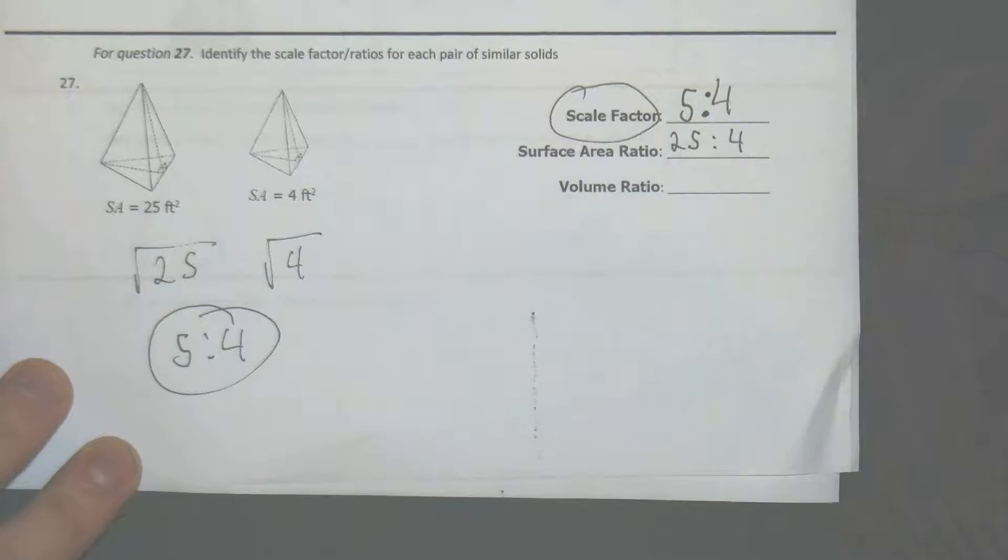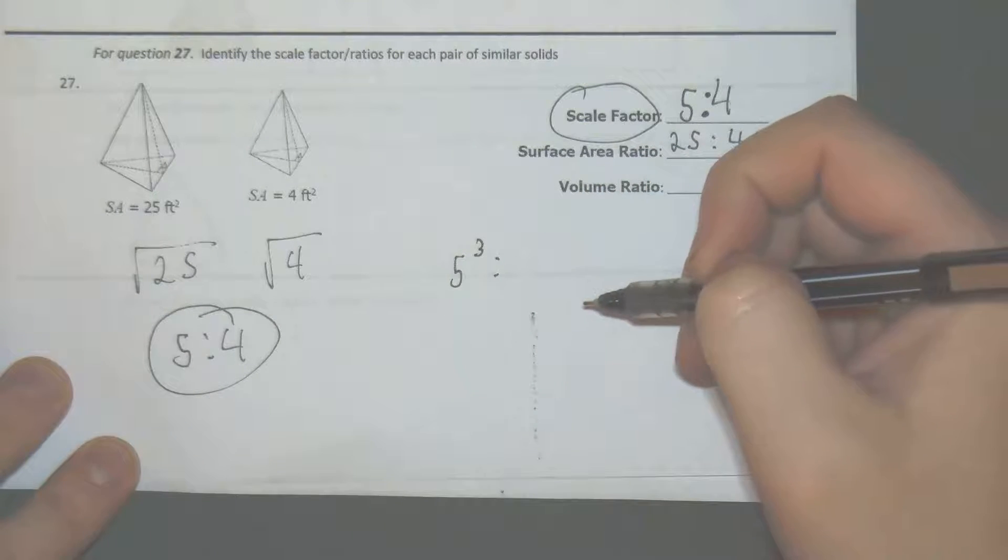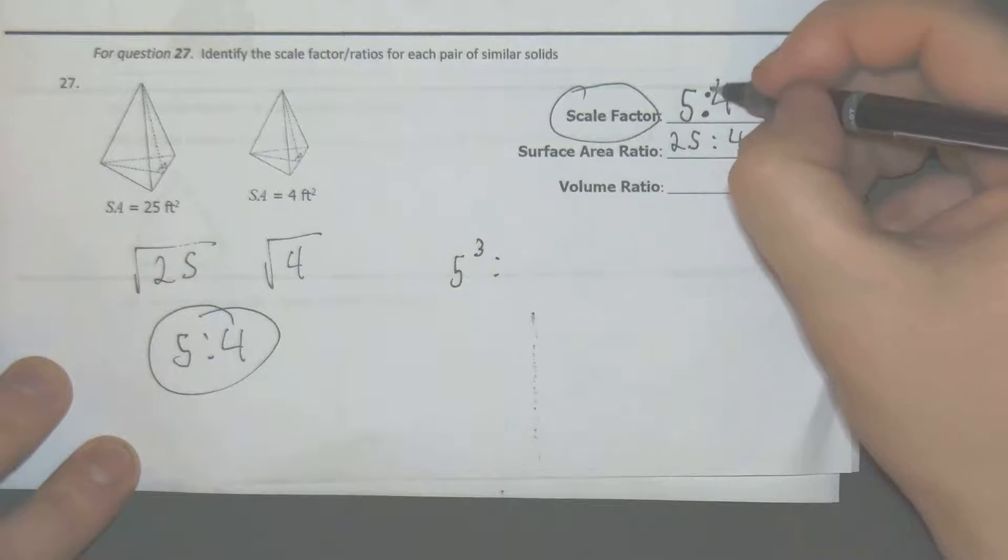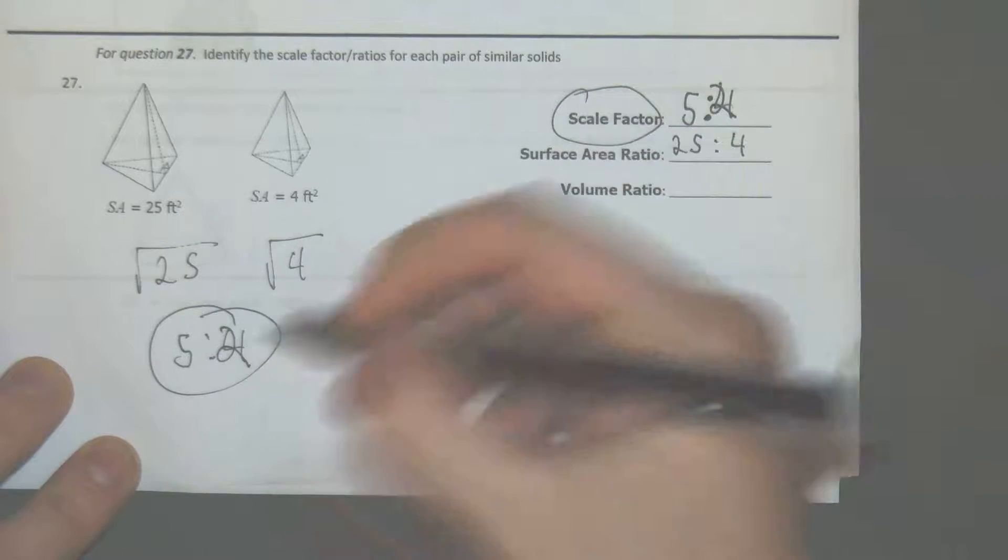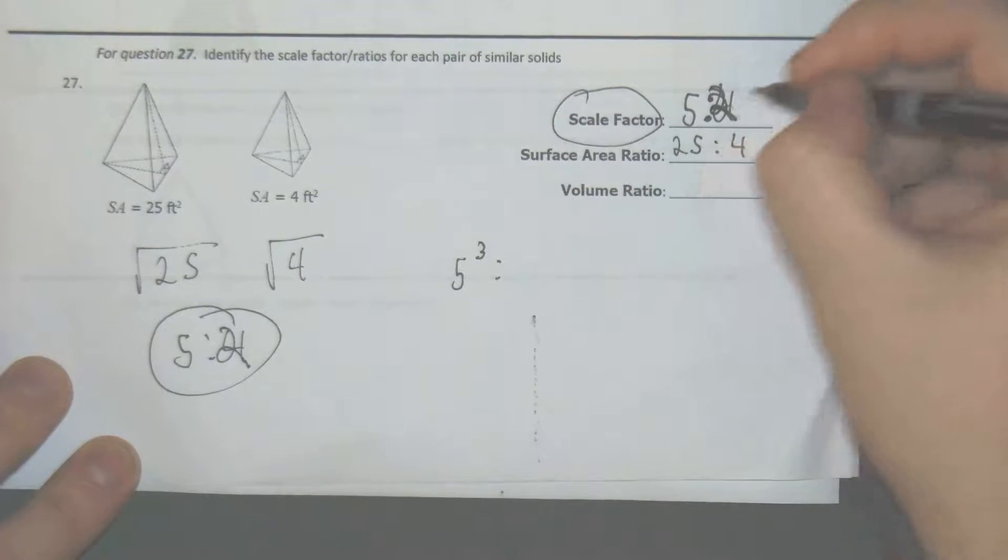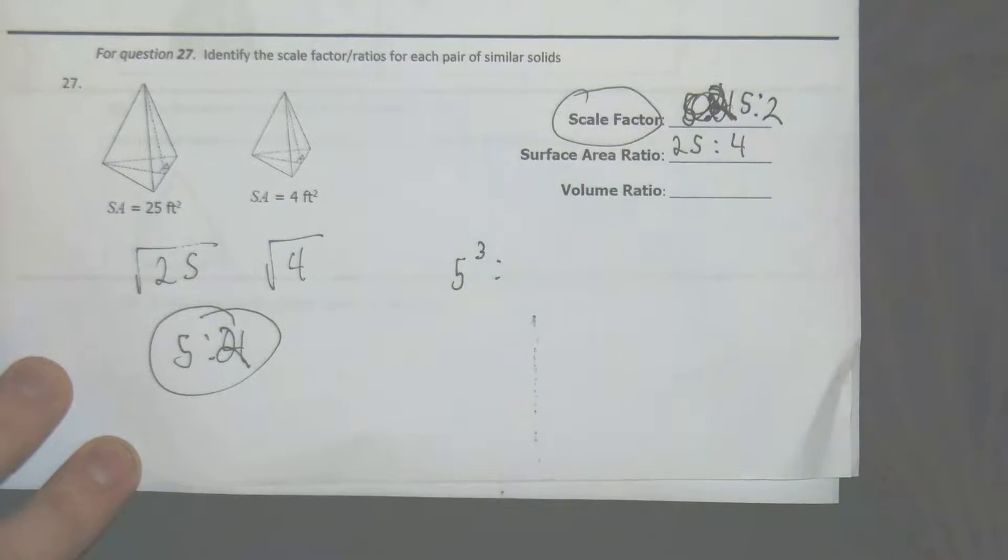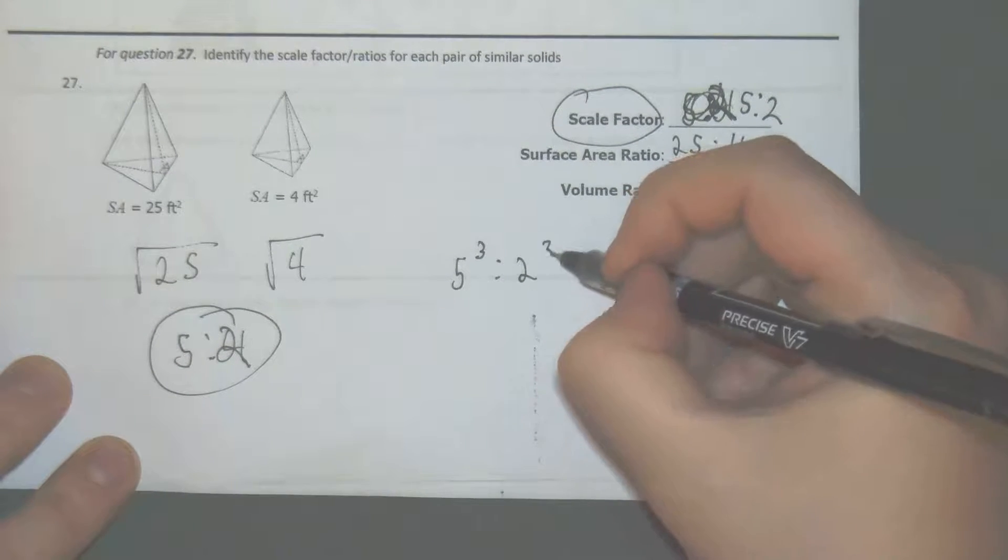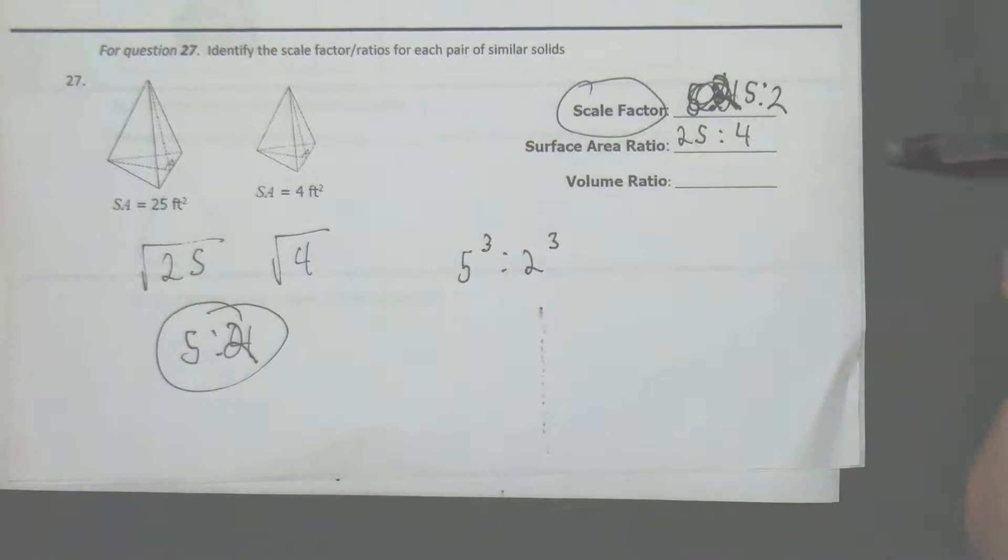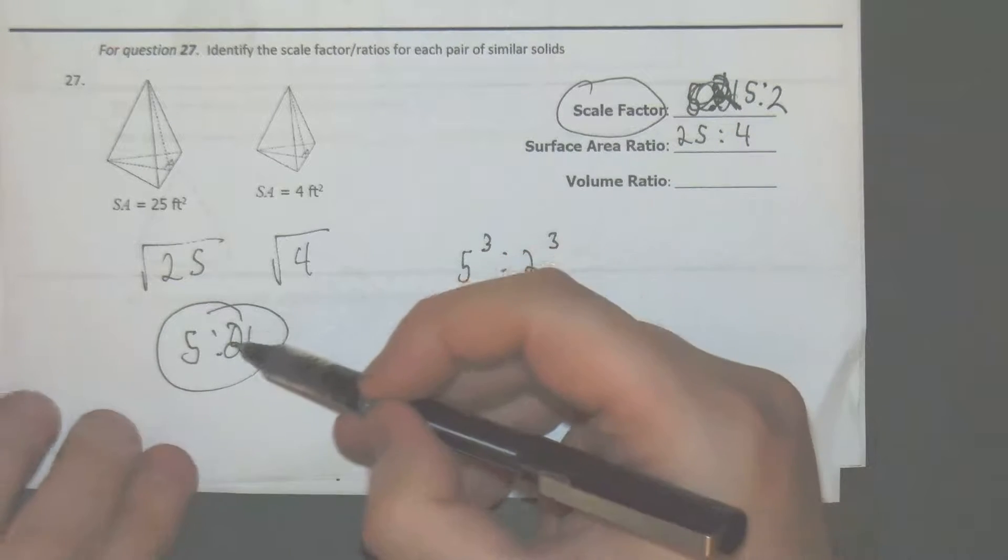The volume ratio, which would be 5 cubed to, or this would be 2. The square root of 4 is 2.